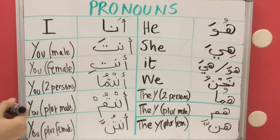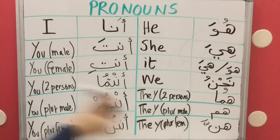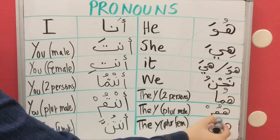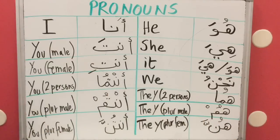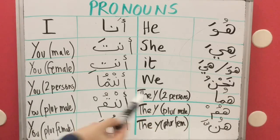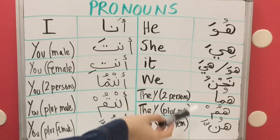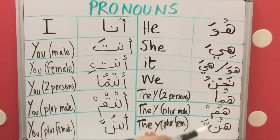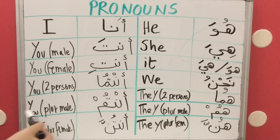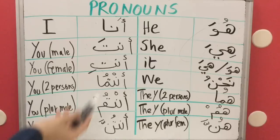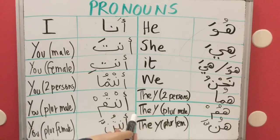If I'm talking about more than two people and they are male, I say 'Hum'. If they are more than two people and female, I say 'Hunna'. So: two people of any gender — Huma; more than two and male, or male and female mixed — Hum; more than two and all female — Hunna.